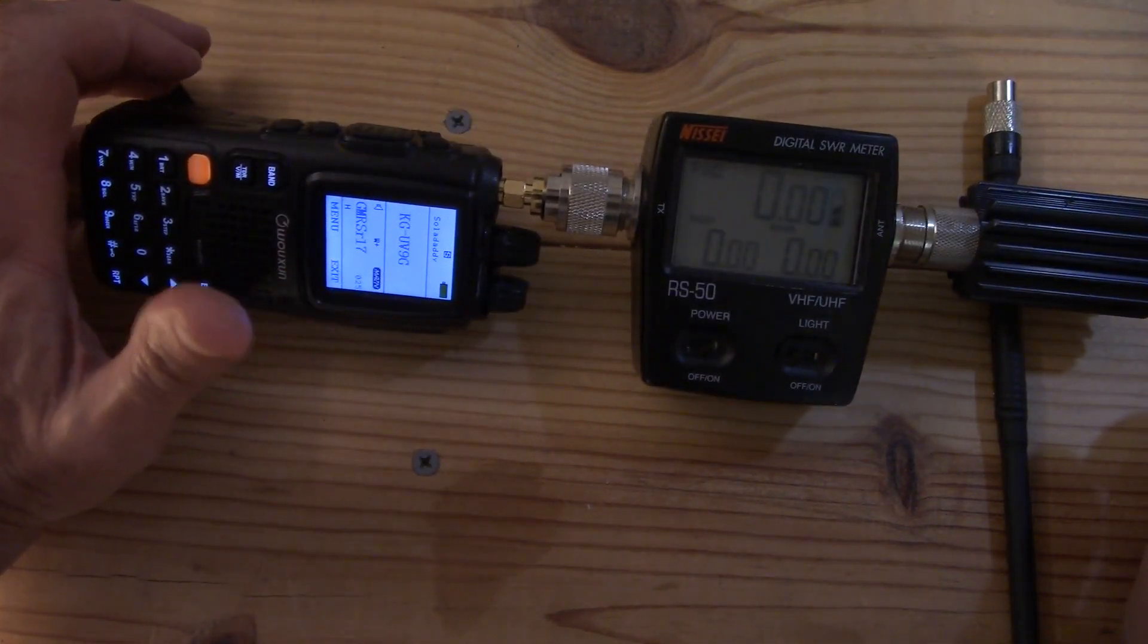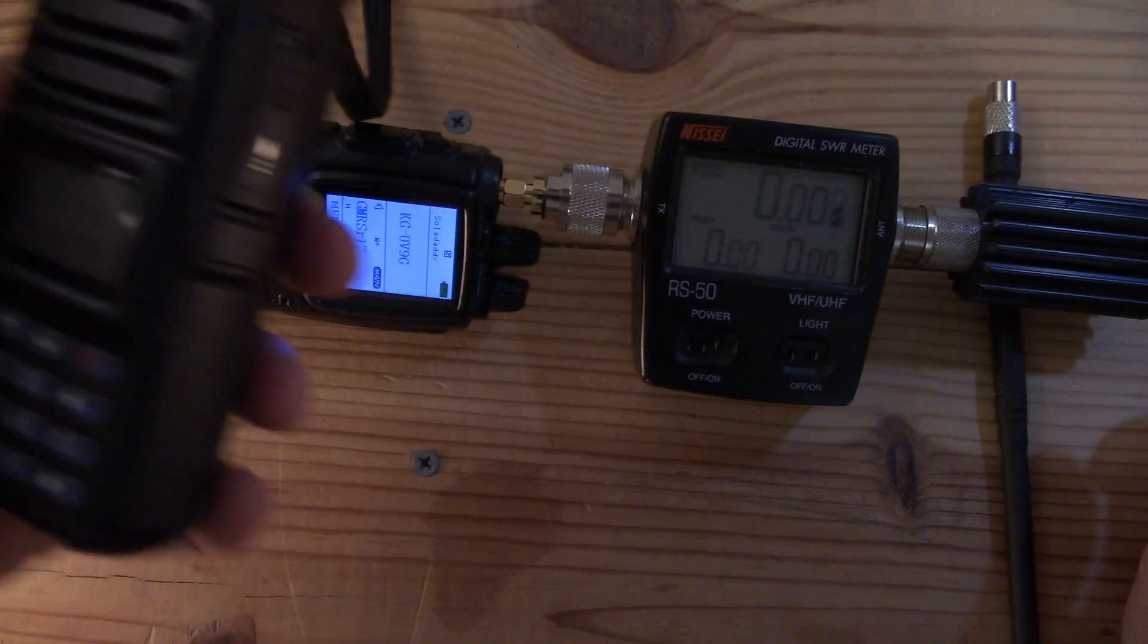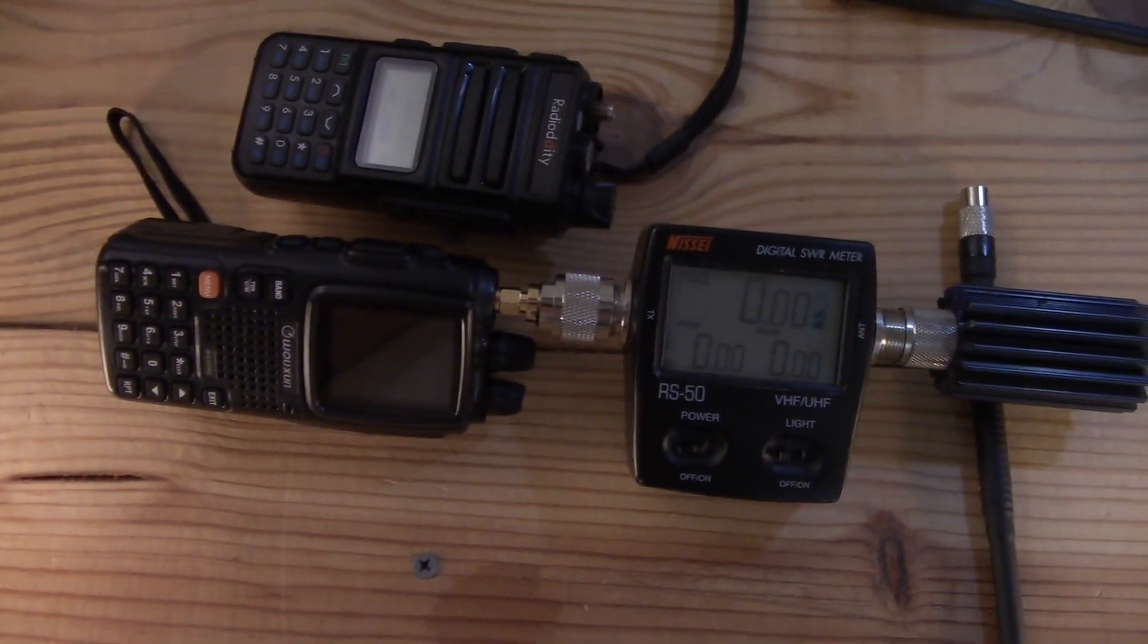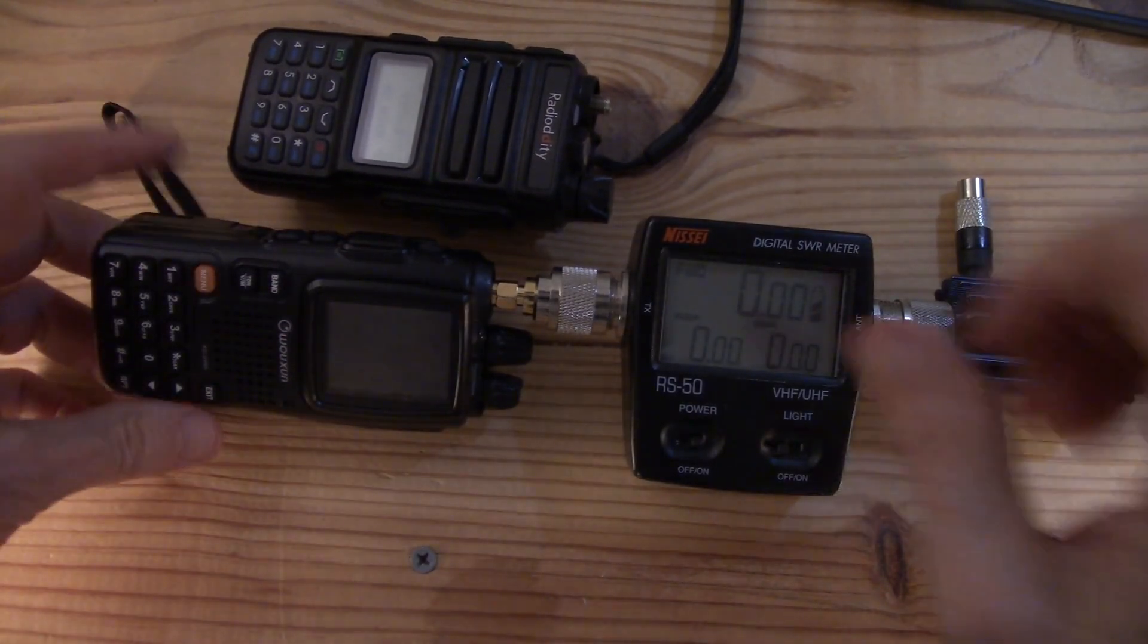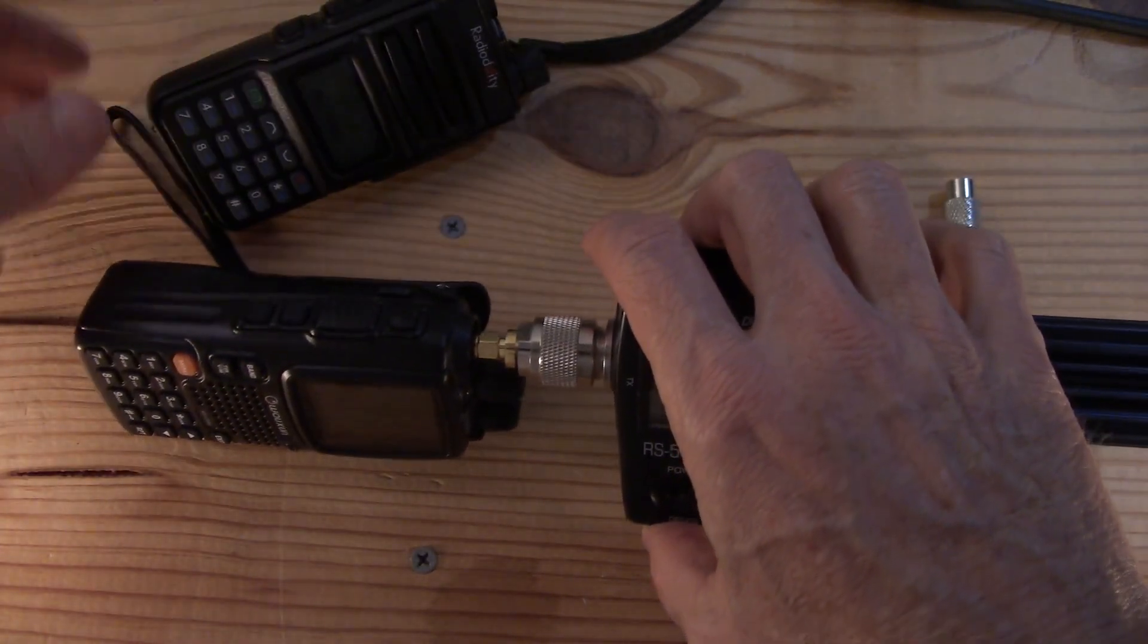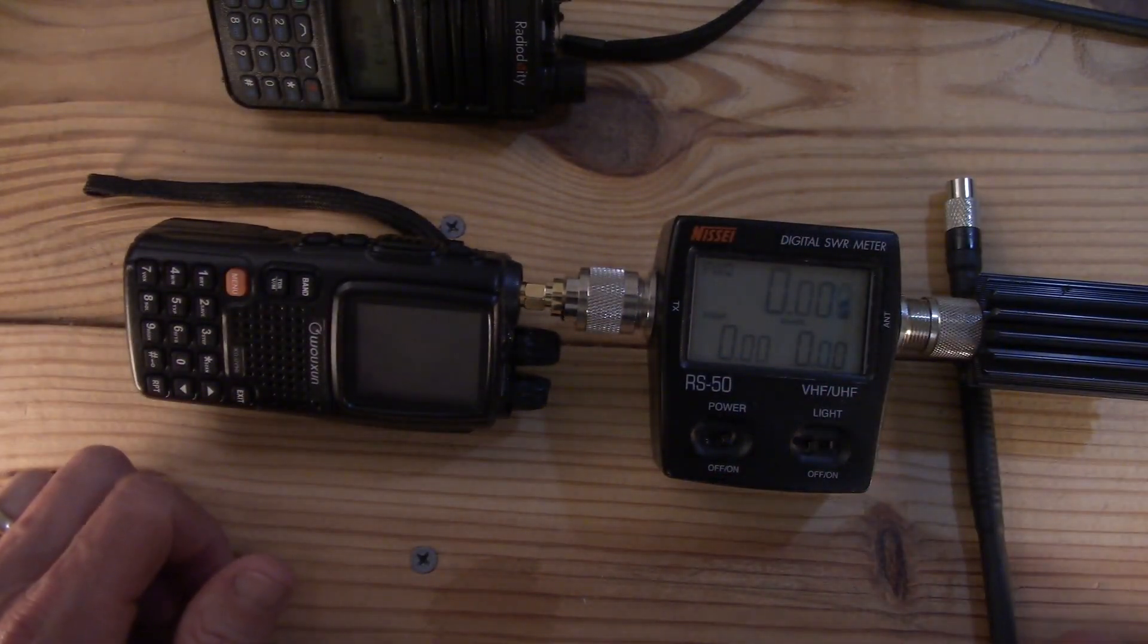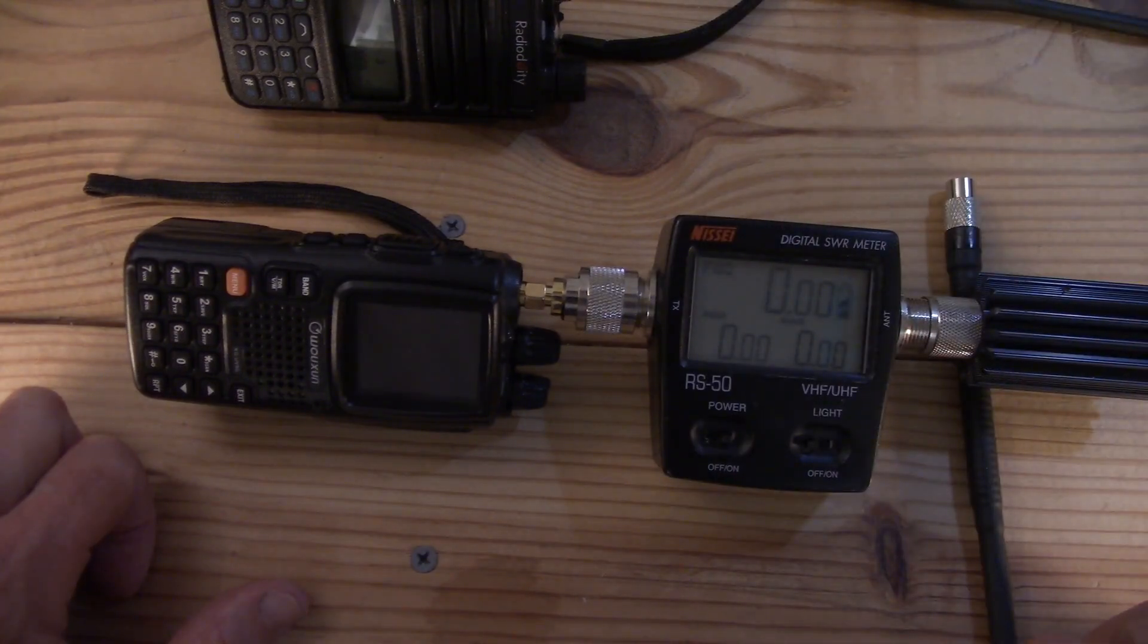So if you want power, it costs a little bit of money. Now the Radioddity did really good too for a lot less money. This one has a bigger battery, so it can do high power longer. High power will drain these batteries—if you sit there and use that a lot, you're gonna drain the battery quick. I like to use low power and only use high when it's absolutely needed.